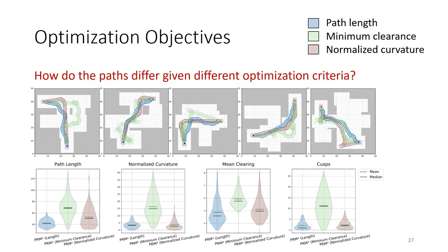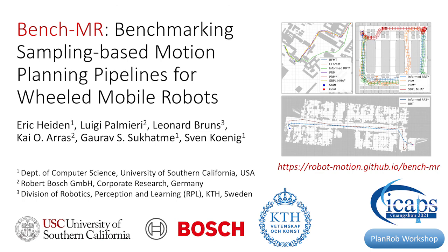With the goal of comparing a large set of state-of-the-art motion planning techniques, we presented BenchMR, the first open-source motion planning benchmarking framework designed for sampling-based motion planning for nonholonomic, wheeled mobile robots. The framework is available as an open-source package, with more details and documentation on our website. In future work, we aim to extend our benchmarking suite to dynamic environments, to support even more realistic autonomous driving scenarios. Thank you for your attention.